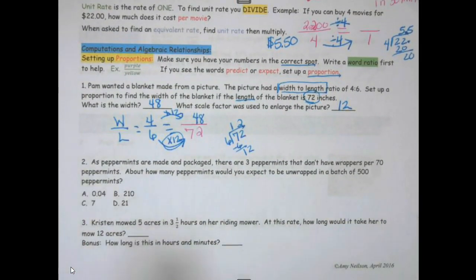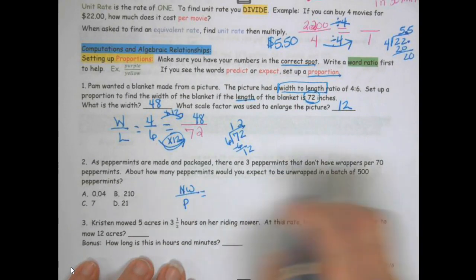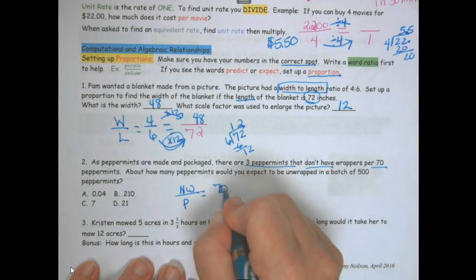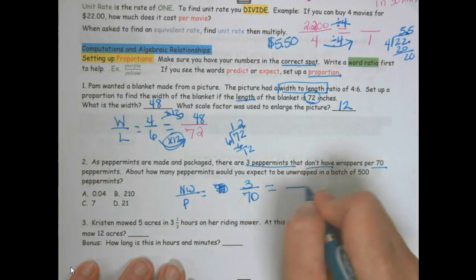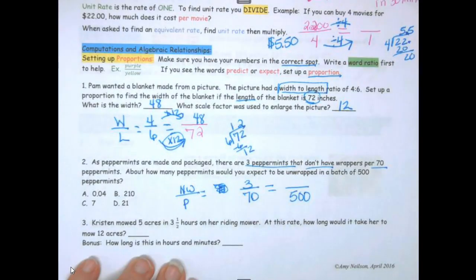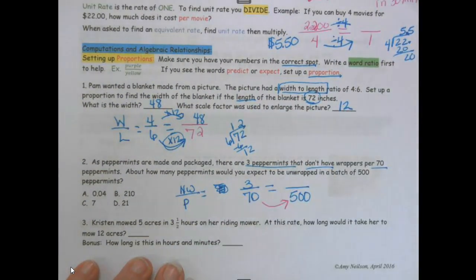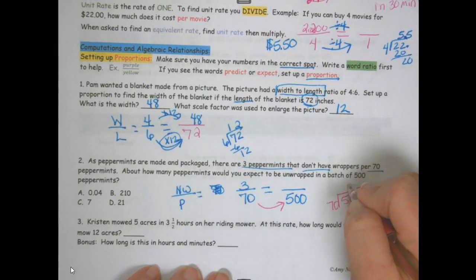As peppermints are made and packaged, there are 3 peppermints that don't have wrappers per 70 peppermints. So no wrappers per peppermint. There are 70, 3 peppermints do not have wrappers. So that's 3 over 70. So remember, your order does matter. So what if we have 500? If I do 500 divided by 70.